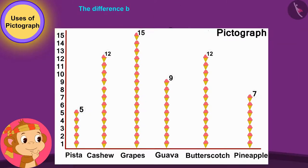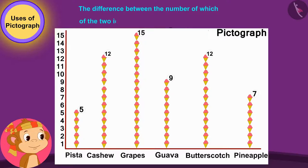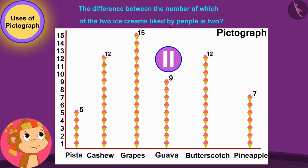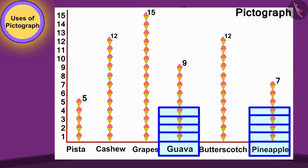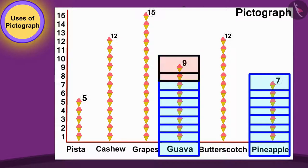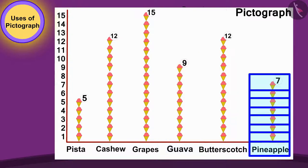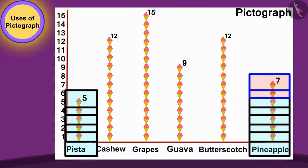Children, can you tell us which two ice creams have a difference of two in the number of people who liked them? You can stop the video and find the answer. That's correct. The guava line has two ice cream symbols more than the pineapple line, and pineapple's line has two ice cream symbols more than Pista ice cream's line. So the difference between the number of people who like guava and pineapple, and pineapple and Pista ice cream, is two.